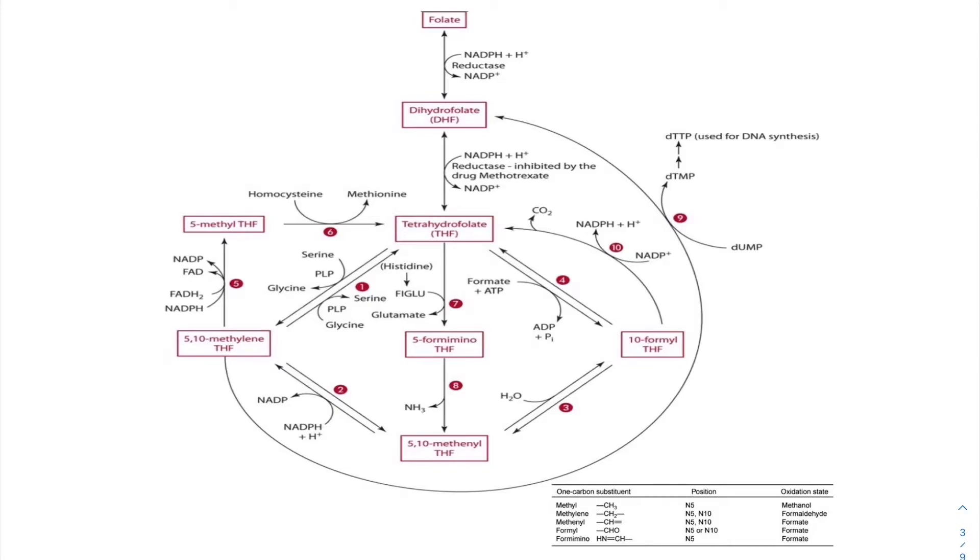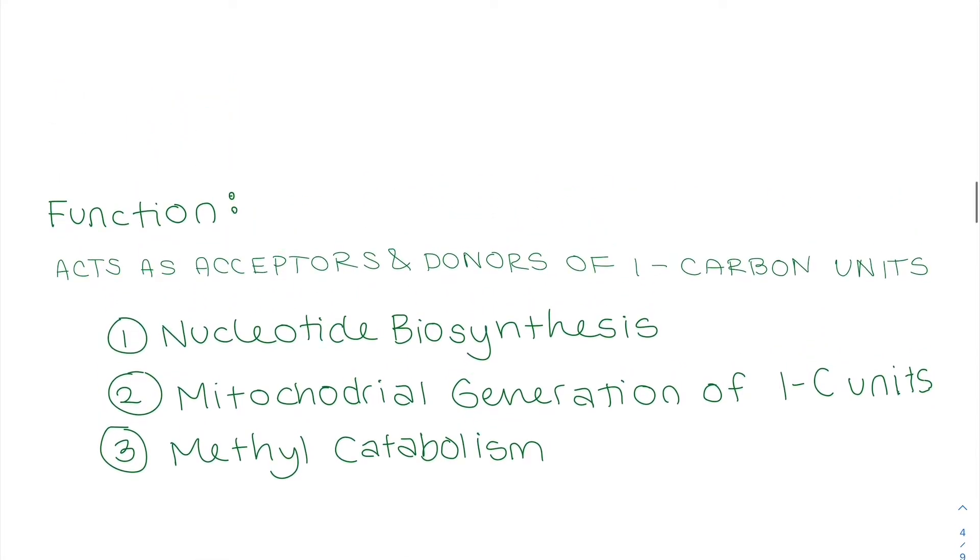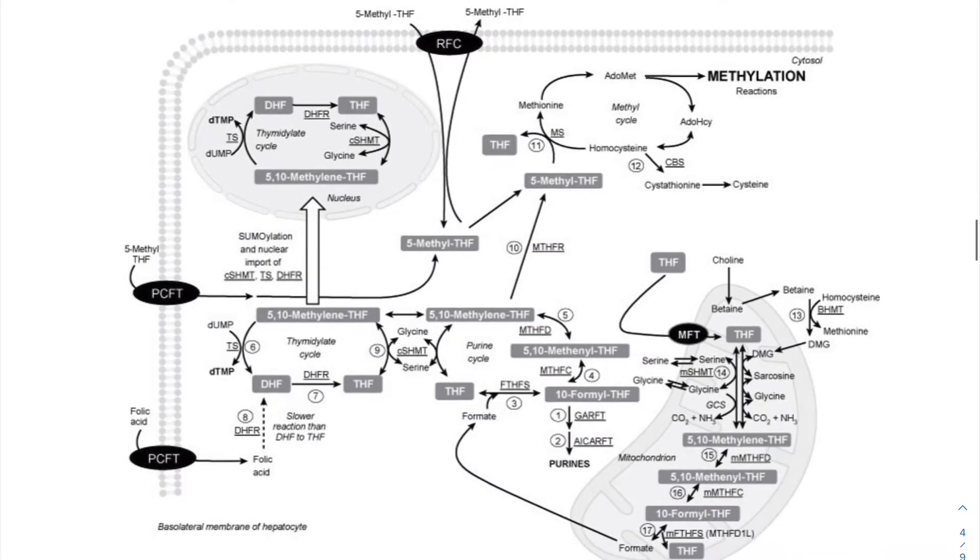How does it function? It has this main primary function acting as an acceptor or a donor of one-carbon units. And it does this in these three reactions. Nucleotide synthesis, this is making our RNA and DNA. Mitochondrial generation of one-carbon units, which has to do with making formate, and then methyl catabolism.